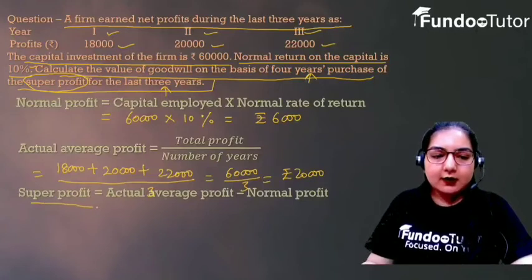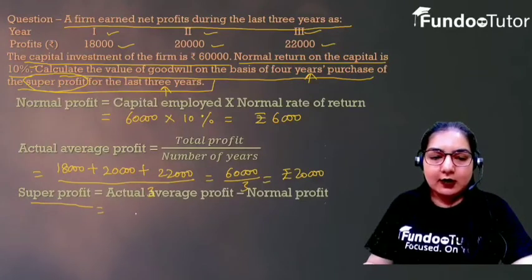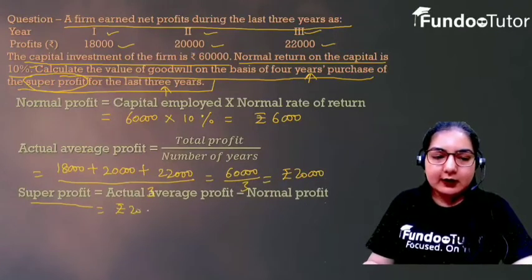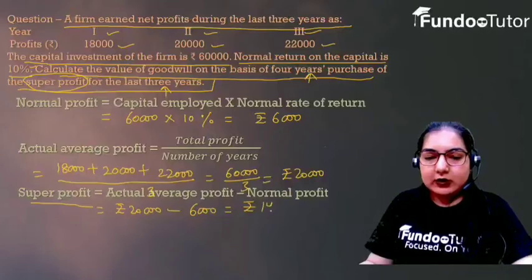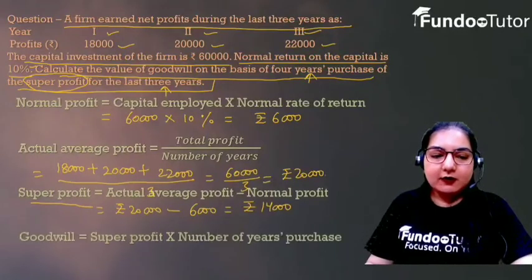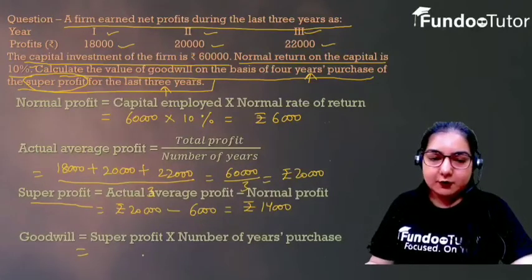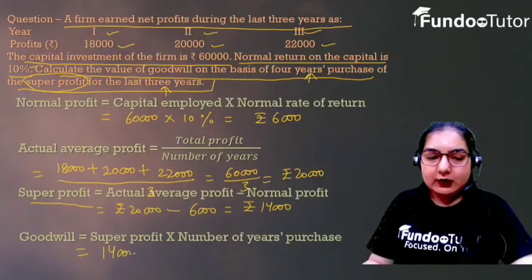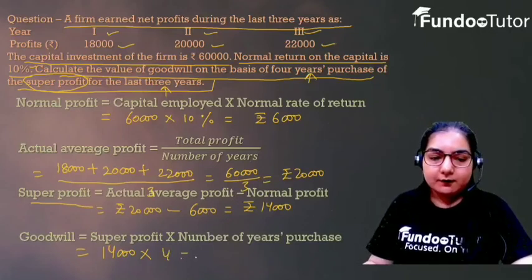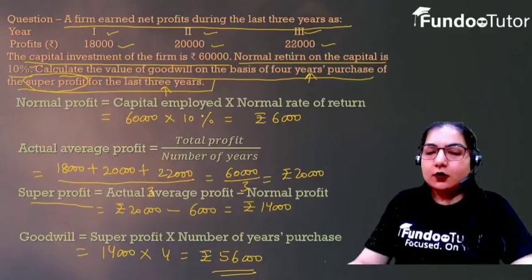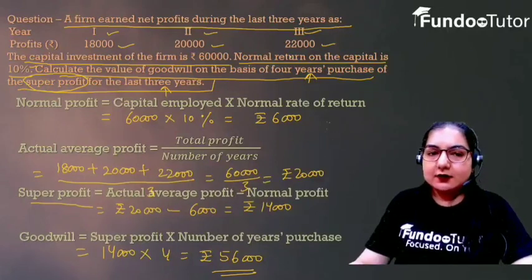Next, we calculate Super Profit: Actual Average Profit minus Normal Profit, which is 20,000 minus 6,000, giving us Super Profit of Rs. 14,000. Finally, Goodwill equals Super Profit multiplied by Number of Years of Purchase: 14,000 multiplied by 4, giving Goodwill of Rs. 56,000.